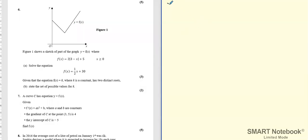So let's have a look at number six here. We have a sketch of a part of a graph of f(x) where we are told what the thing is.